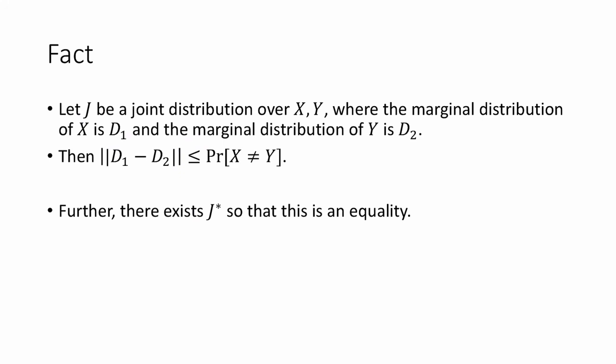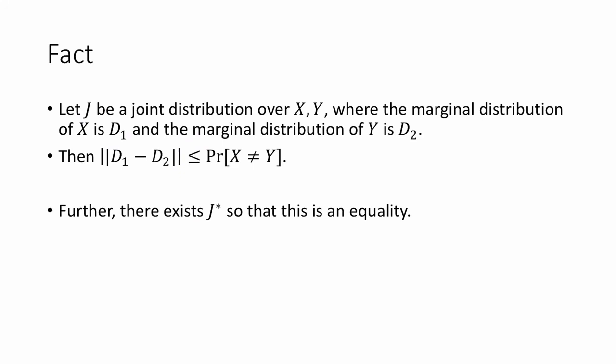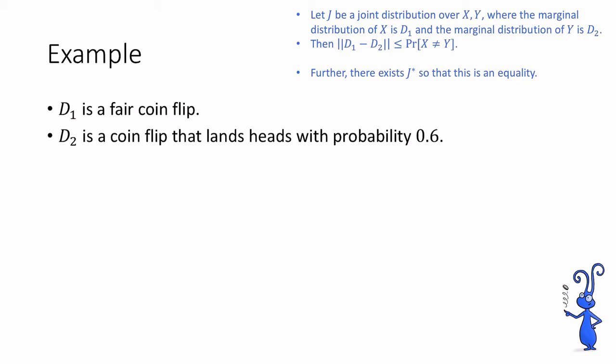This fact might be a bit hard to parse abstractly, so let's see an example. Suppose that d1 is a fair coin flip — 50% heads, 50% tails. d2 is a coin flip that lands heads with probability 0.6 and tails with probability 0.4. Now let's consider this joint distribution. With probability 0.5, both X and Y are heads. With probability 0, X is heads and Y is tails. With probability 0.1, X is tails and Y is heads. And with probability 0.4, both are tails.